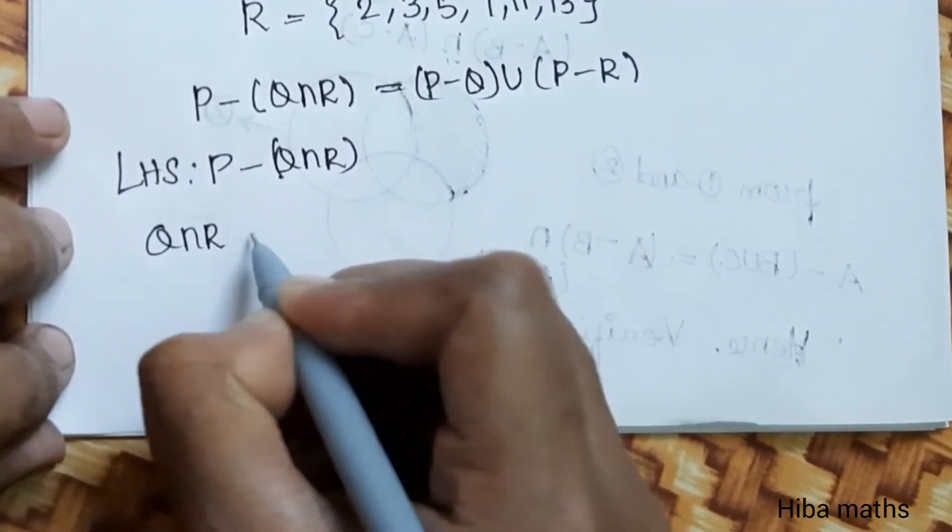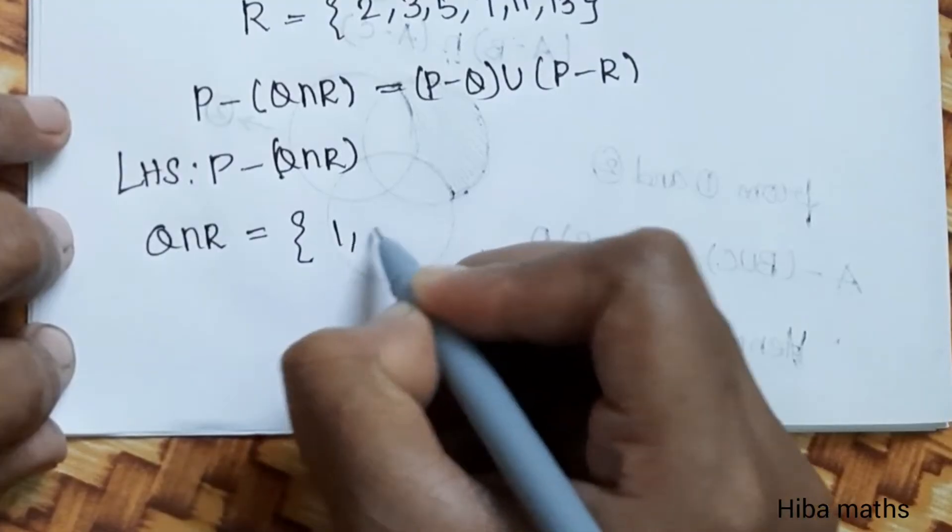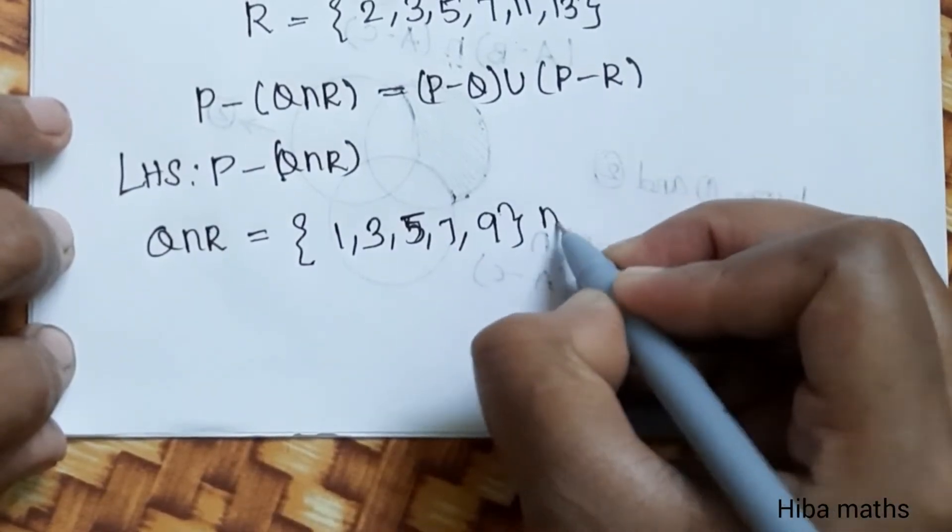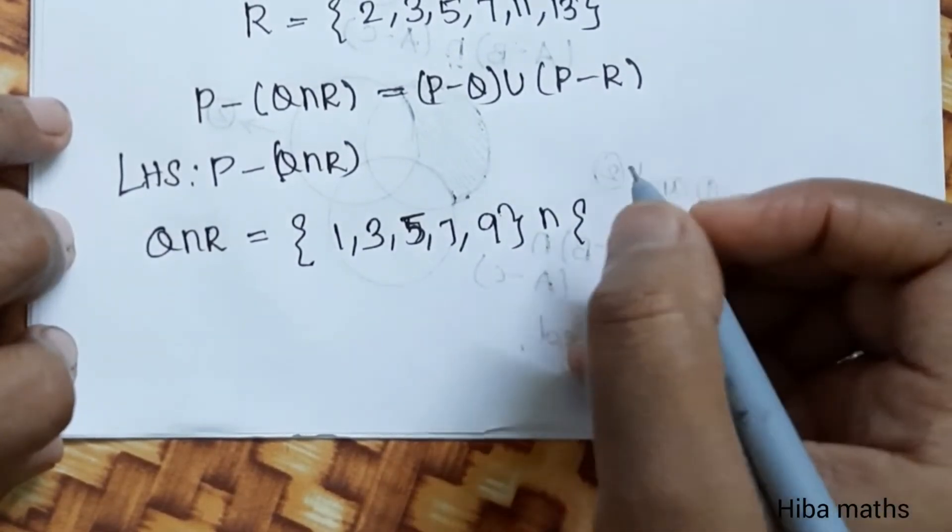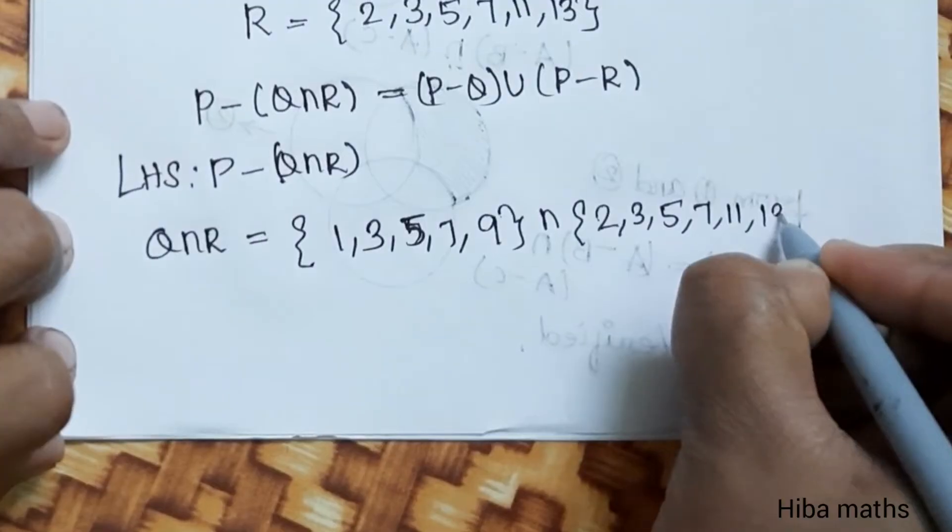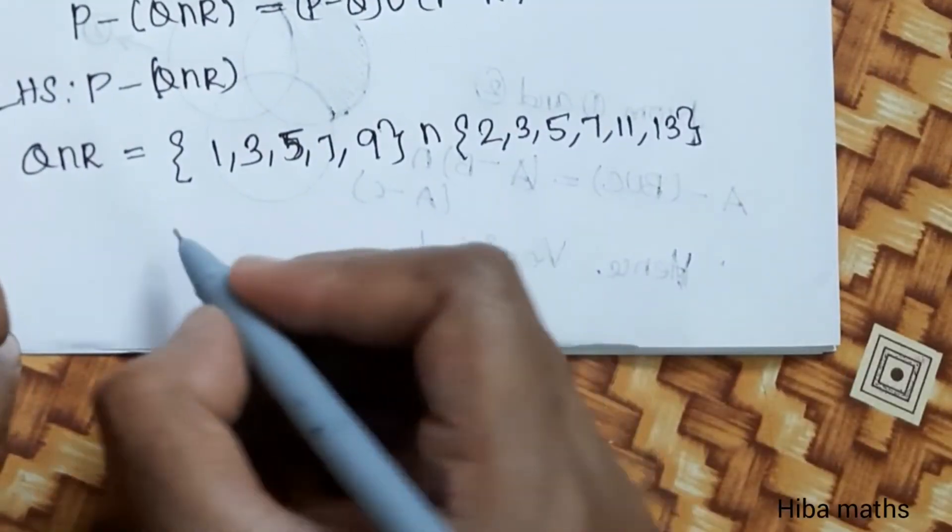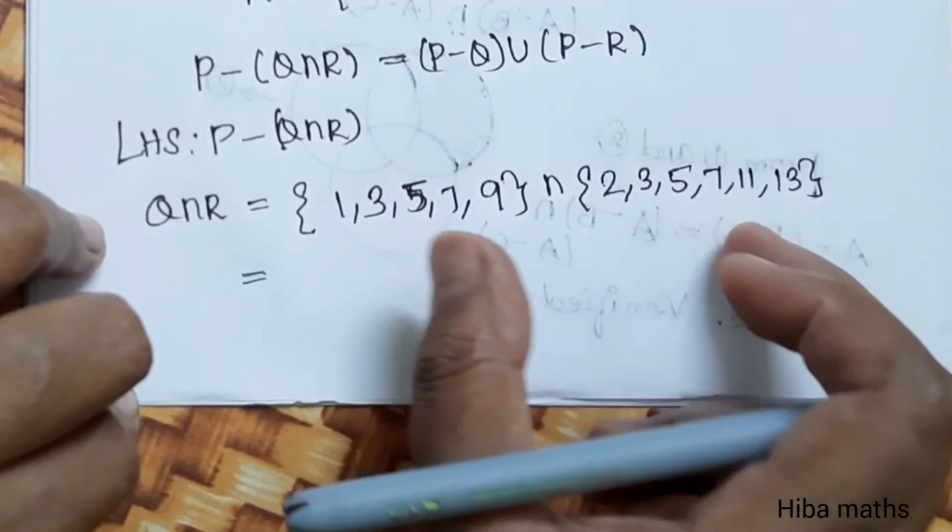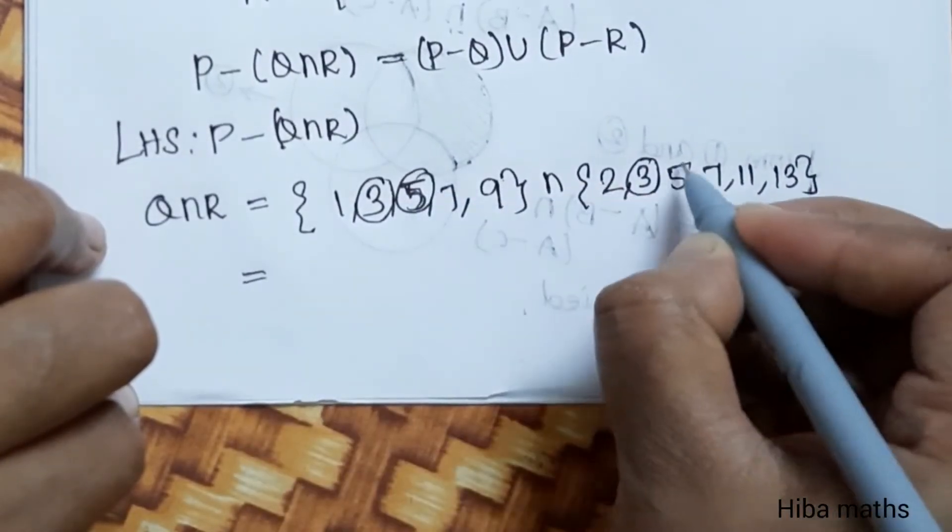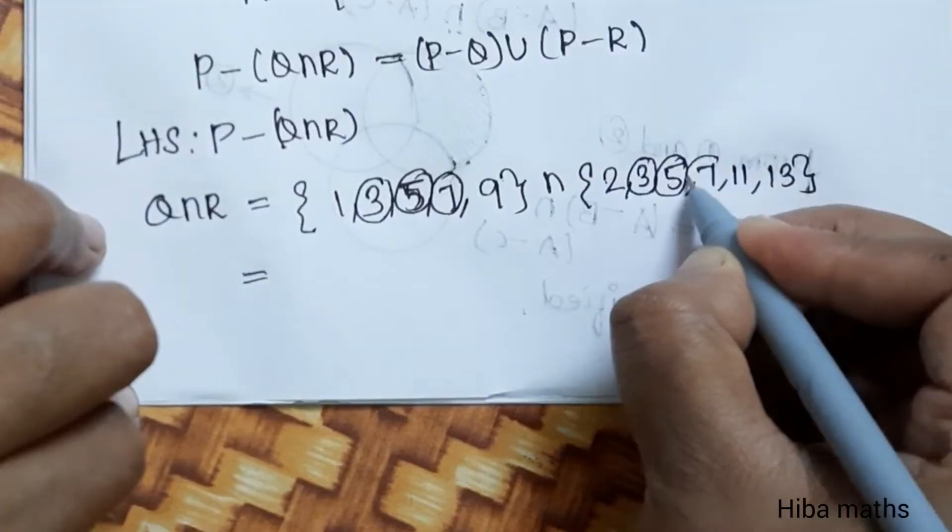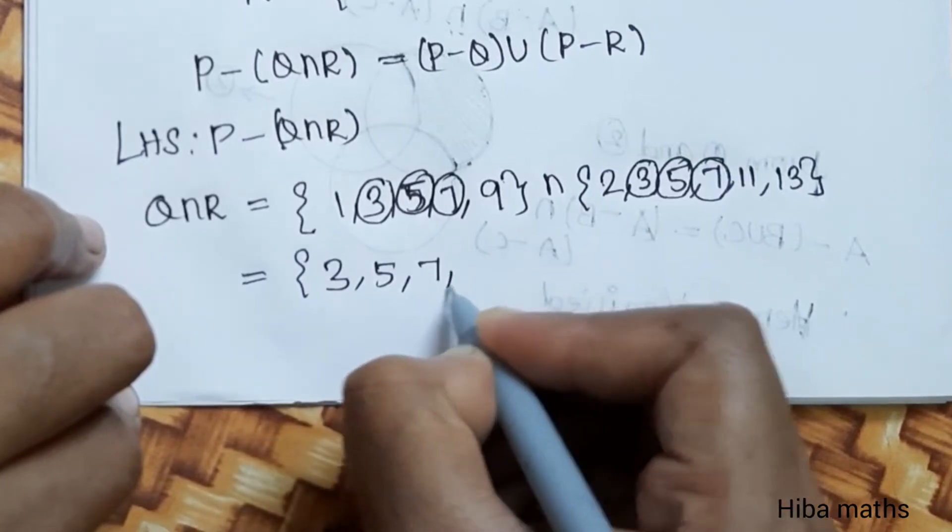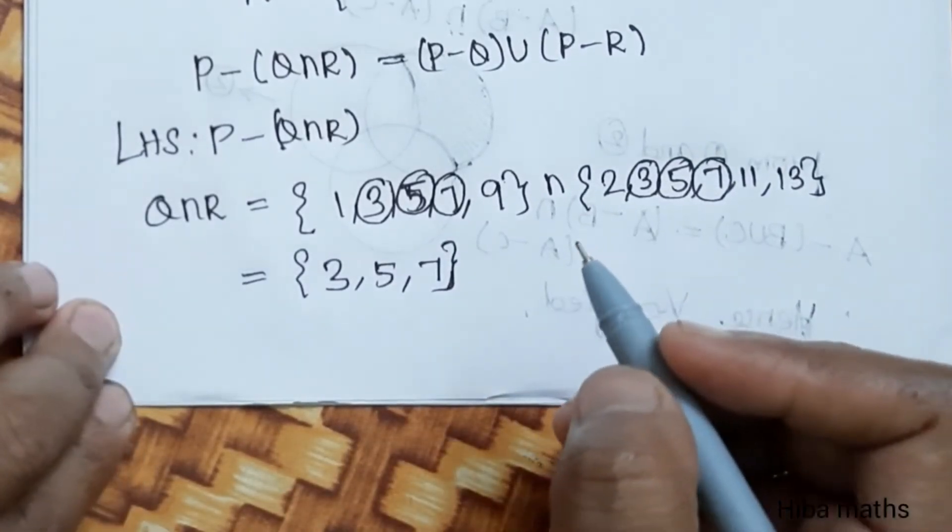First step, we need to do the bracket. Q intersection R: Q is 1, 3, 5, 7, 9 and R is 2, 3, 5, 7, 11, 13. Intersection of two sets means common elements: 3, 5, 7. So Q intersection R equals 3, 5, 7.